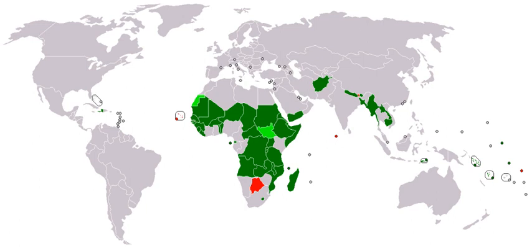Developing countries include, in decreasing order of economic growth or size of the capital market: newly industrialized countries, emerging markets, frontier markets, and least developed countries. Therefore, the least developed countries are the poorest of the developing countries.